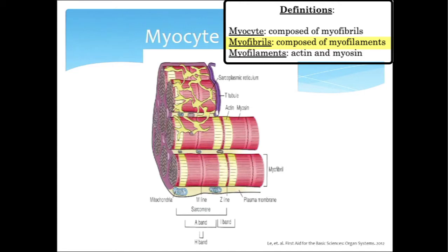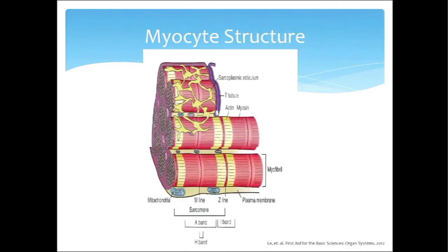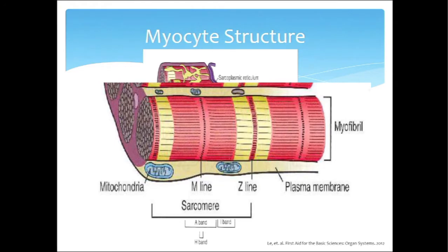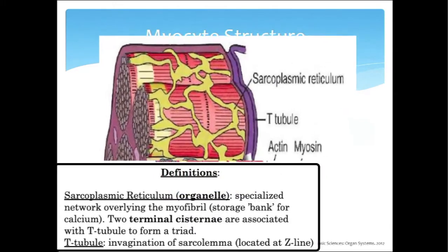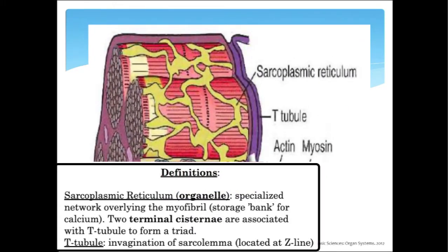Hanging around all these myofibrils, within the myofibrils, that's where you get your actin and myosin elements — those are the elements of the cell responsible for actually making muscle contraction happen. You have mitochondria hanging out that help deliver a lot of the energy required for myocyte contraction. And then, woven like a web throughout all of these different myofibrils, you have this structure called the sarcoplasmic reticulum, which relates to storage and delivery of calcium.